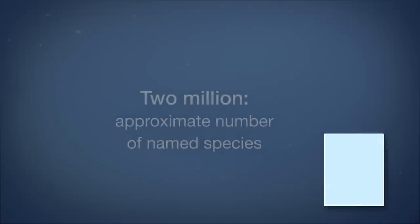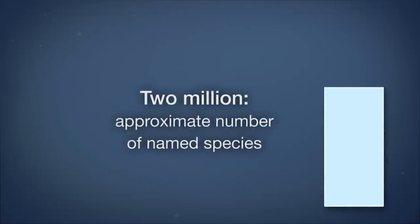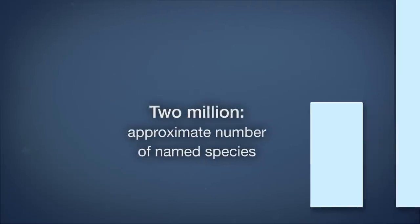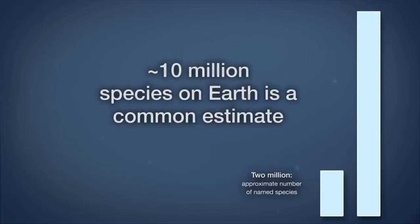A species is sometimes defined as individuals of a group that can interbreed and produce viable offspring. There are currently 2 million named or documented species on Earth, but scientists that study biodiversity estimate that there could be anywhere from 5 million to 50 million species on Earth. 10 million is a common estimate for how many species are on Earth.